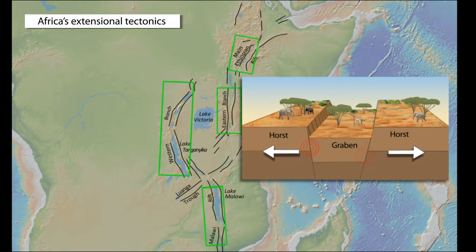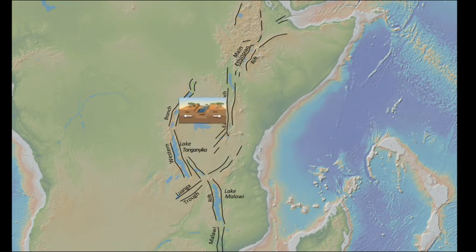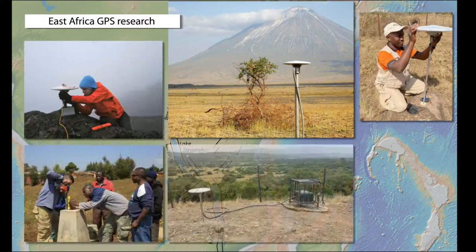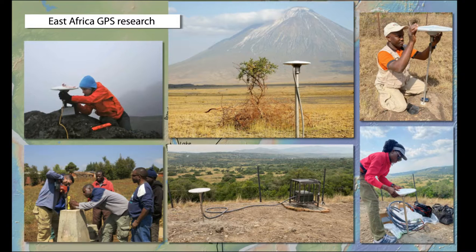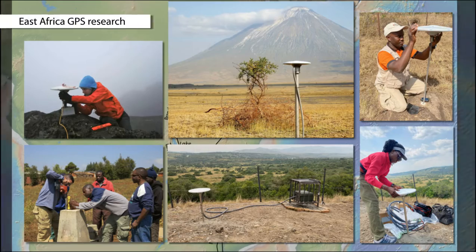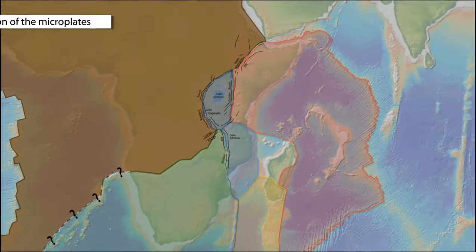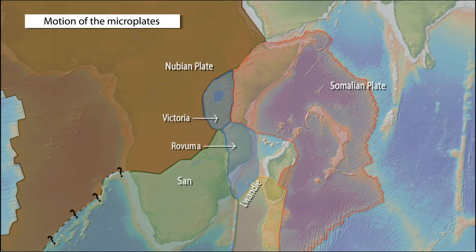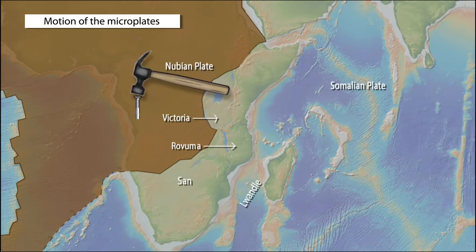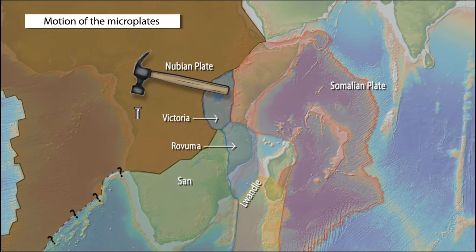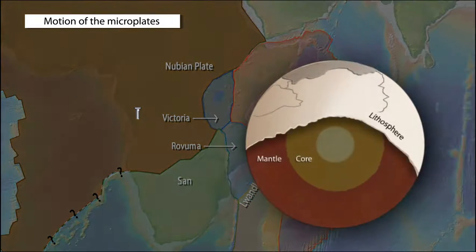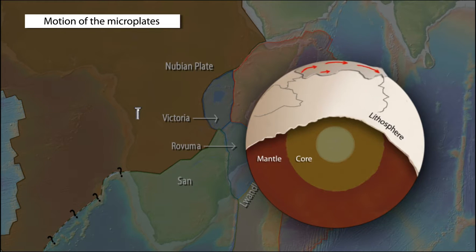The Great Lakes of East Africa occupy many of these down-dropped valleys. Over the past 20 years, high-precision GPS surveys have determined motions of plates and microplates in this region. As GPS research continues, refinements will be made. But the following model of the East African Rift system summarizes the state of the science. Let's nail down the middle of the African continent to view plate motions with respect to the Nubian Plate. Let's also remember that plate motions are rotations of relatively thin shells along Earth's spherical surface.